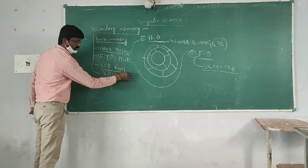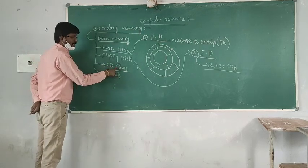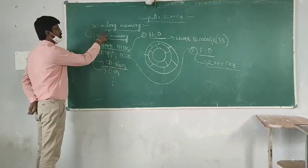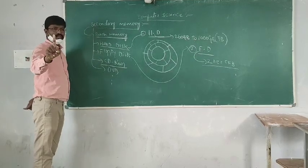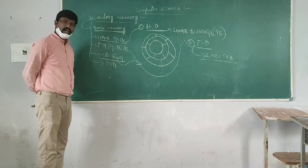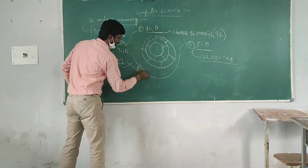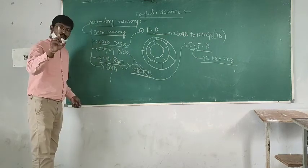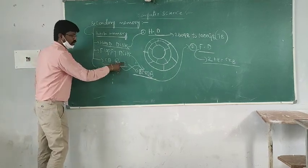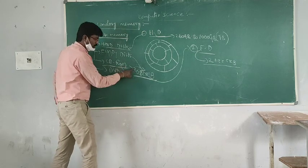The third one is CD-ROM. CD-ROM stands for Compact Disc Read-Only Memory. It is a read-only memory device used to store the data permanently. The maximum capacity of CD-ROM is 682 MB, not GB.